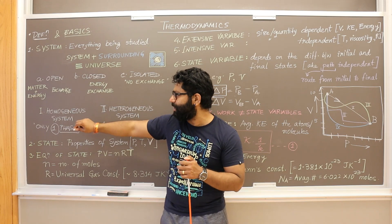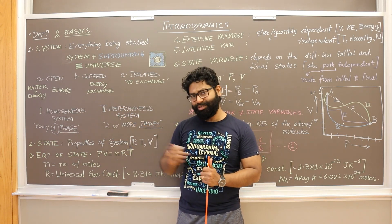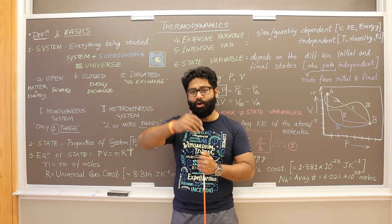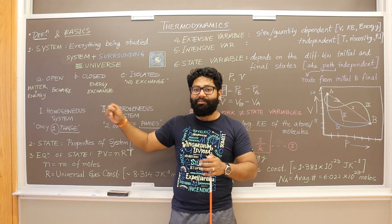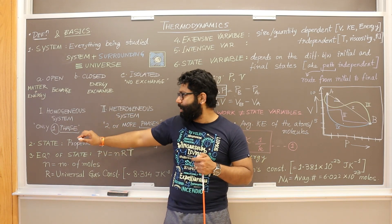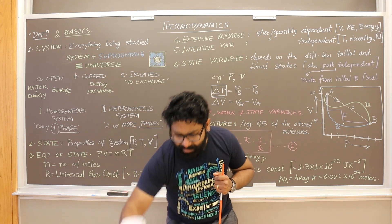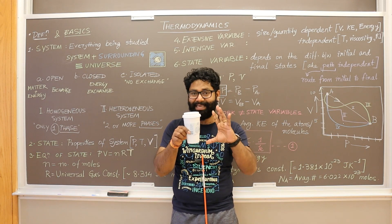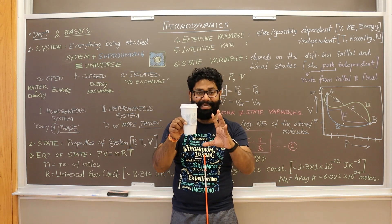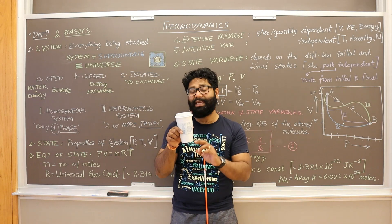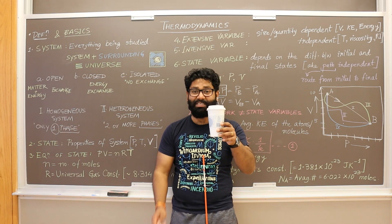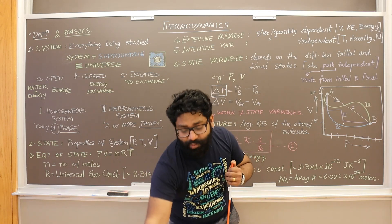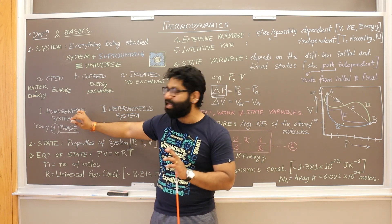Another simple concept is the different kinds of systems. You can have a homogeneous system or a heterogeneous system. A homogeneous system is one which has only one phase. For example, liquid water in a cup is one phase, making it a homogeneous system. On the contrary, if you have a system with ice and water, it has two phases, making it a heterogeneous system. Anything with two or more phases is heterogeneous; with only one phase, it is homogeneous.